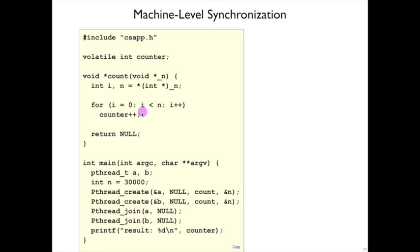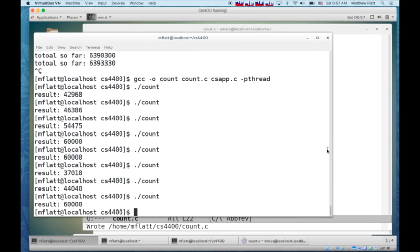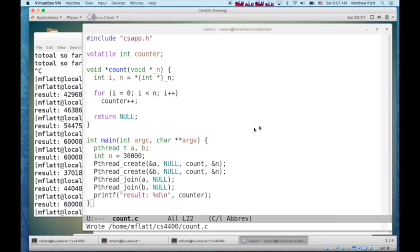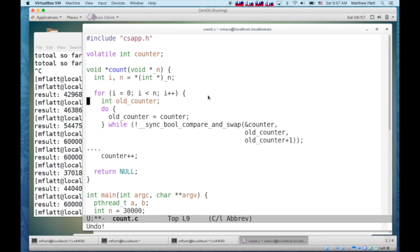So the solution, we're going to use the low-level solution here, which is to use a compare and swap on counter, and that'll look like this. So we're just going to change the body of the while loop, the for loop here, to go into its own nested loop.